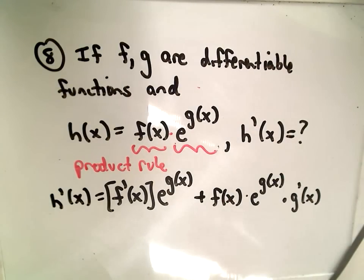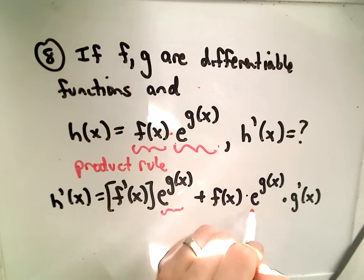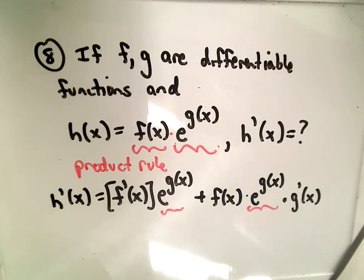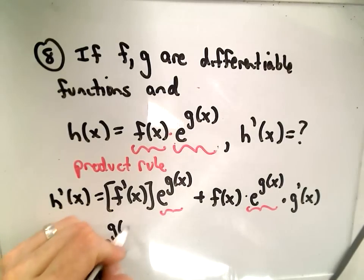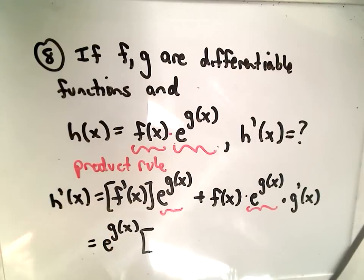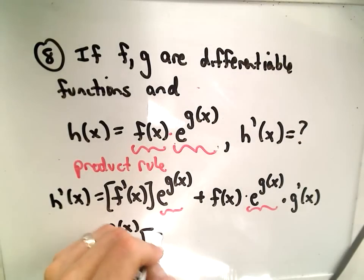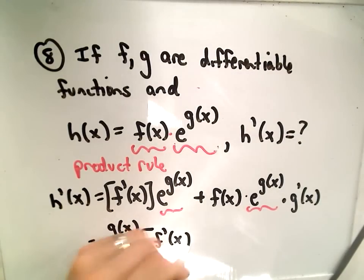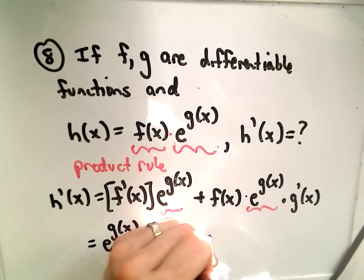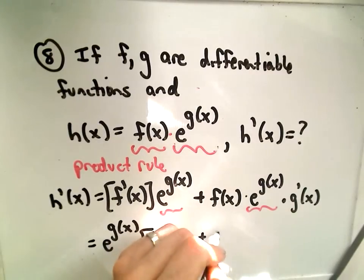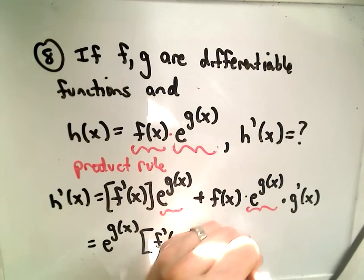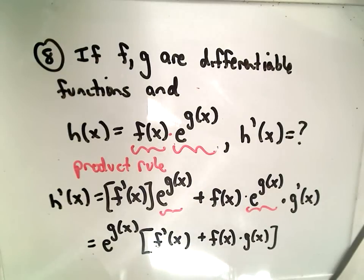Now we just clean this up a little bit. Notice there is an e to the g of x in both the first and second terms. I'm going to factor that out: e to the g of x. So we have f prime, and if we factor out e to the g of x, we have f of x times g prime of x left over. And that is one of their answers.